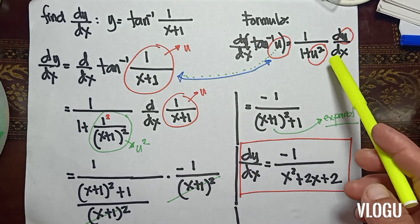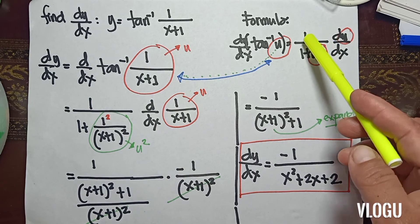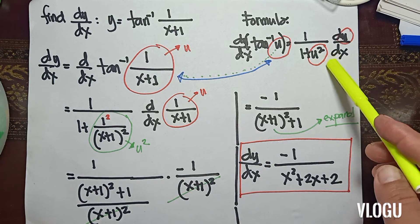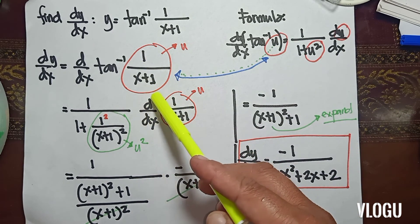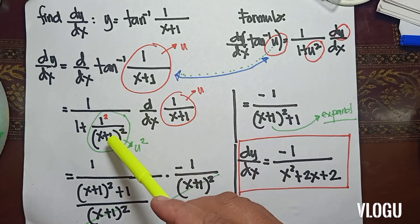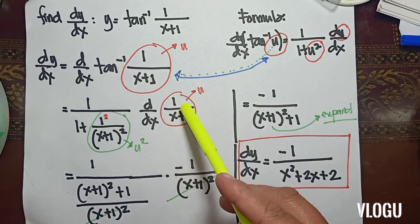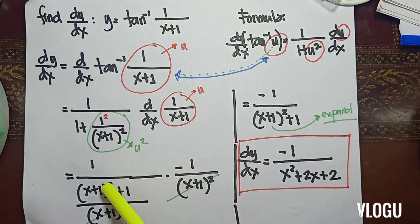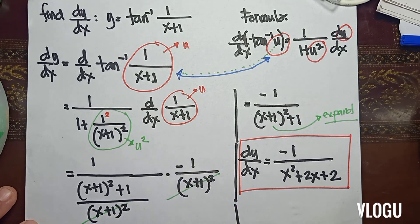Proceeding to the formula: the derivative of tangent inverse equals 1 over 1 plus u squared, where u squared is the square of 1 over (x+1), giving 1 squared over (x+1) squared. Then we find the derivative of 1 over (x+1). The common denominator is (x+1) squared.